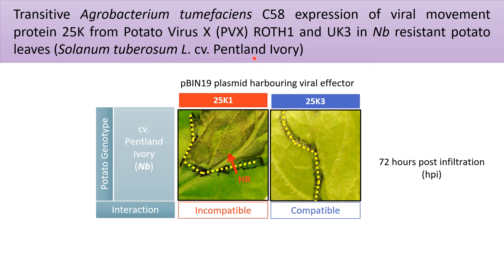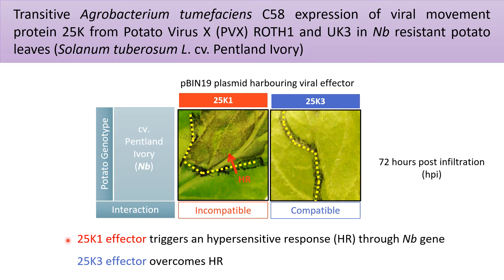Solanum tuberosum Penton Ivory holds an NB gene that confers resistance. When we transiently express the 25K1 movement protein from Potato Virus X, it develops a hypersensitive response in an incompatible interaction. When we do the same with the 25K3 effector, it overcomes the hypersensitive response in a compatible interaction. In summary, the 25K1 effector triggers a hypersensitive response and the 25K3 effector overcomes it.